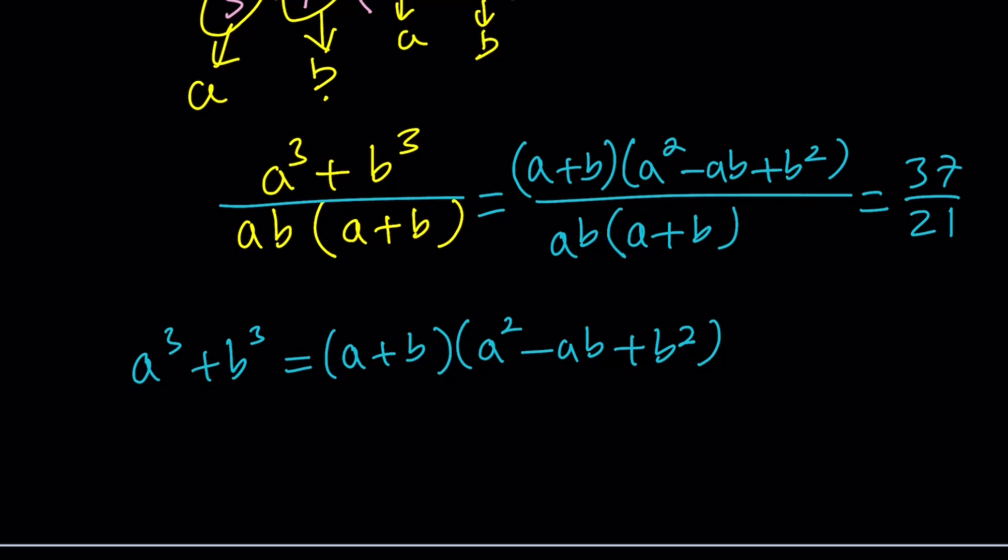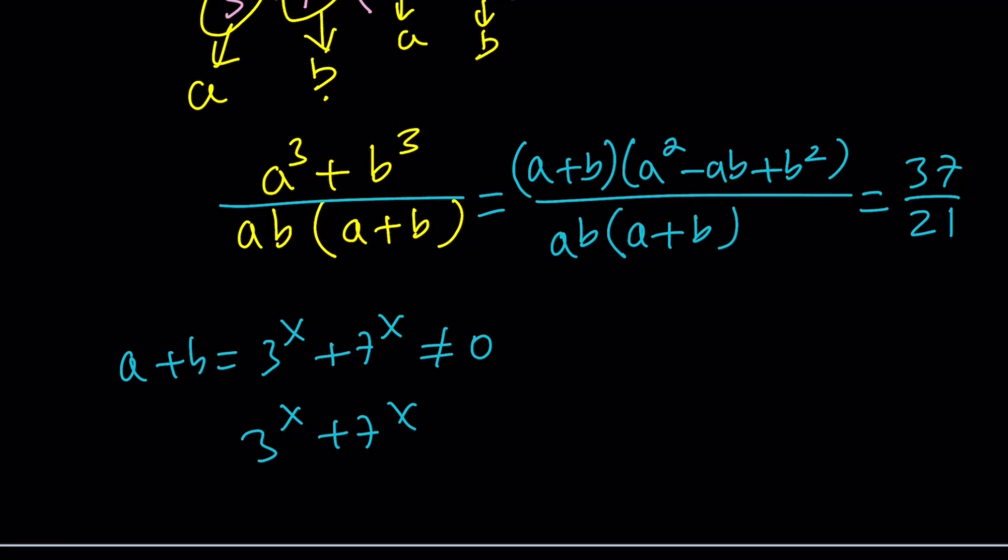One thing you need to be careful about is (a + b) should not be 0, otherwise you can't cancel it out. But what is (a + b)? It's 3^x + 7^x, and that will never equal 0 for real numbers. But if you're looking for complex solutions, you can try to solve that equation. Let's focus on this for reals and cancel those out.